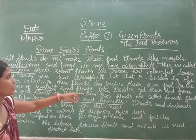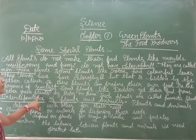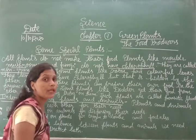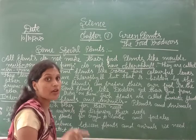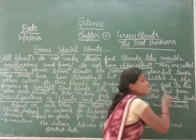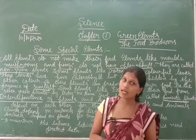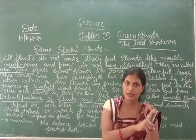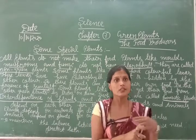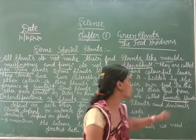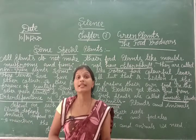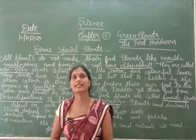Some plants, like dodder — also called Amarbe — get their food from other green plants. Amarbe does not prepare its own food; it depends on another plant for food. These plants are called parasitic plants, which fall in the category of heterotrophic plants. You may also have heard about insectivorous plants, which eat insects — these are also a type of heterotrophic plant.